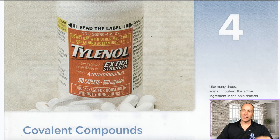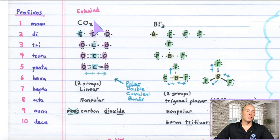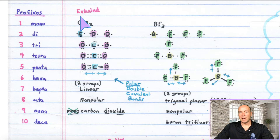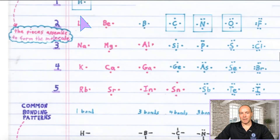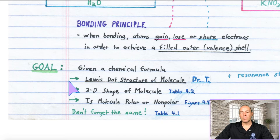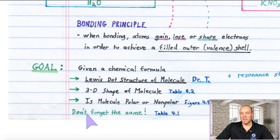What we'll do this time is take a look at several examples of covalent compounds — maybe 10 or 11 examples — and we will get their Lewis structures, their molecular shapes, determine whether or not they are polar, and then name them. That's the goal of the chapter. If you're given a chemical formula, you should be able to draw the Lewis dot structure, assign its three-dimensional shape, determine whether or not it's polar, and name it.